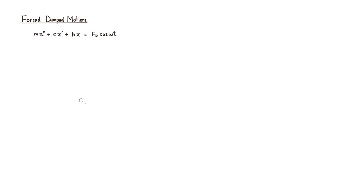There are a couple of solutions. There is new terminology here: something called the transient solution. The transient solution is actually the complementary solution, x_c(t), which is the same as the complementary solution of this differential equation. Since there is damping, the complementary solution is the solution of the homogeneous equation, meaning the right-hand side is zero.